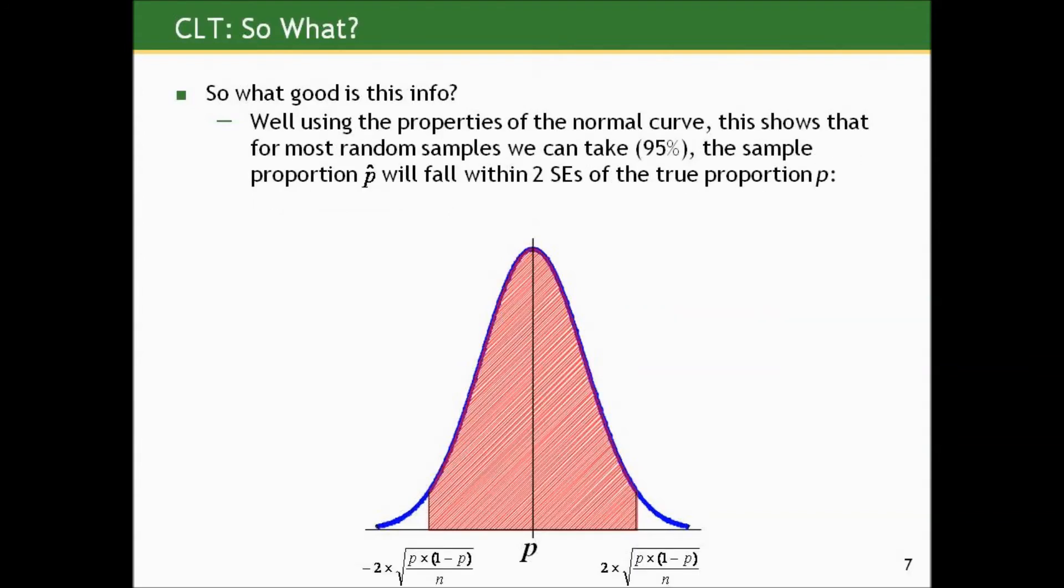So again, what good is this info? It's the same exact logic we saw with means. While using properties of the normal curve, we know that most random samples we could take, 95% of the samples we could take, that our sample proportion will fall within two standard errors of the true proportion.